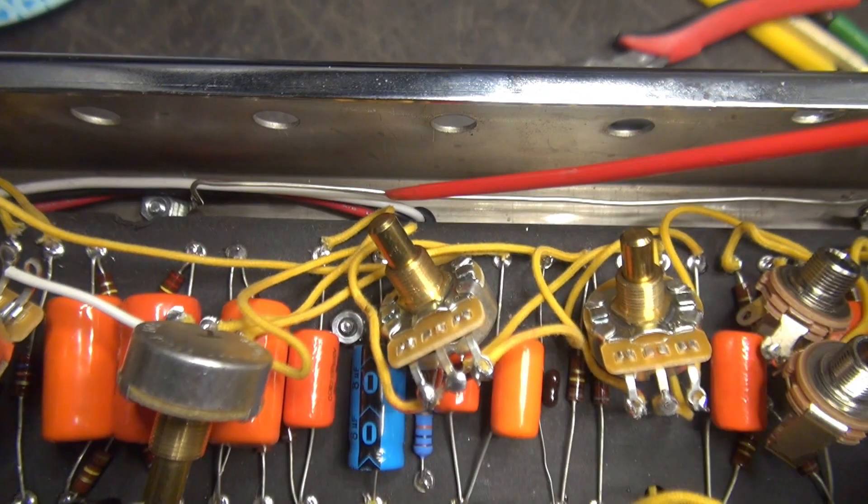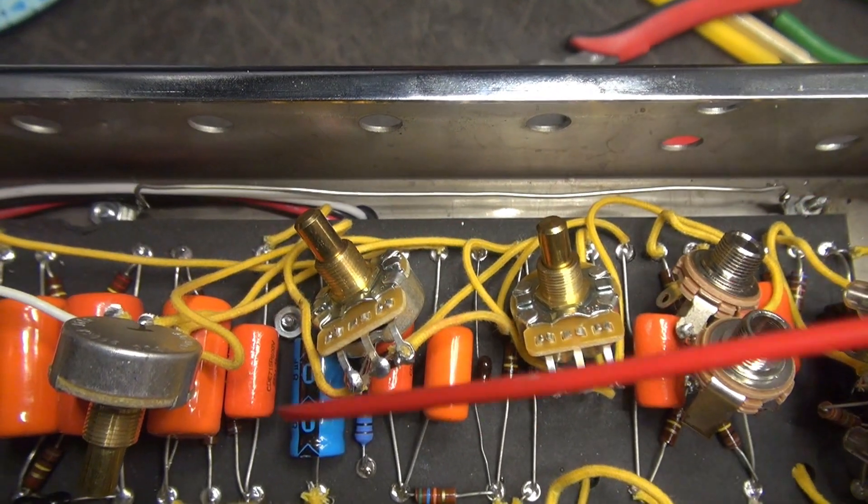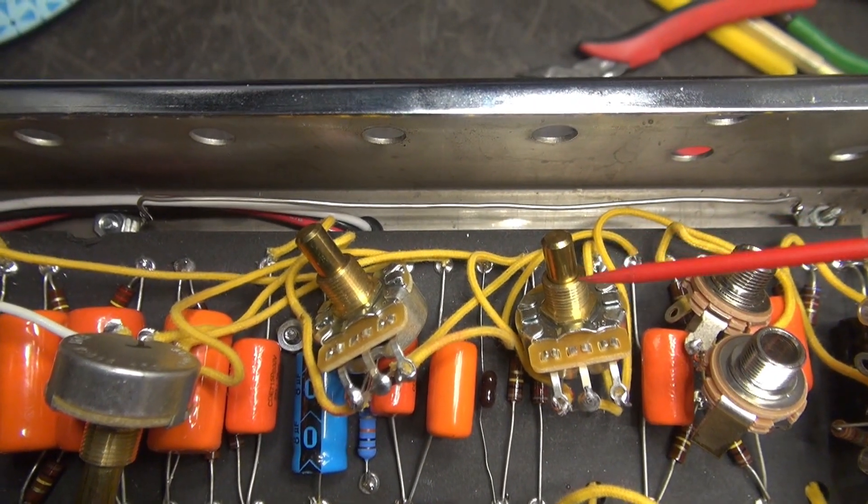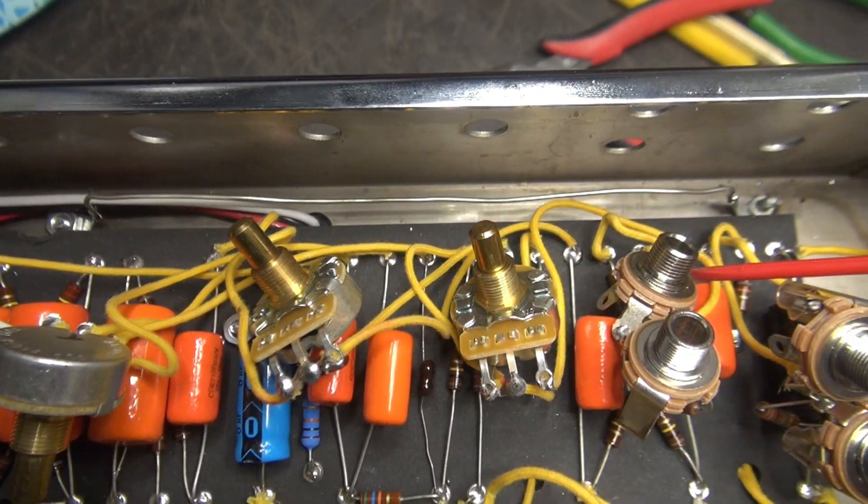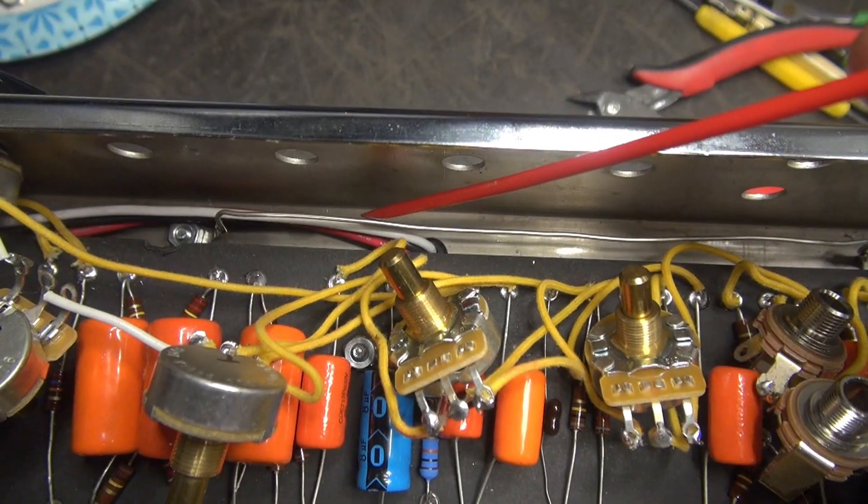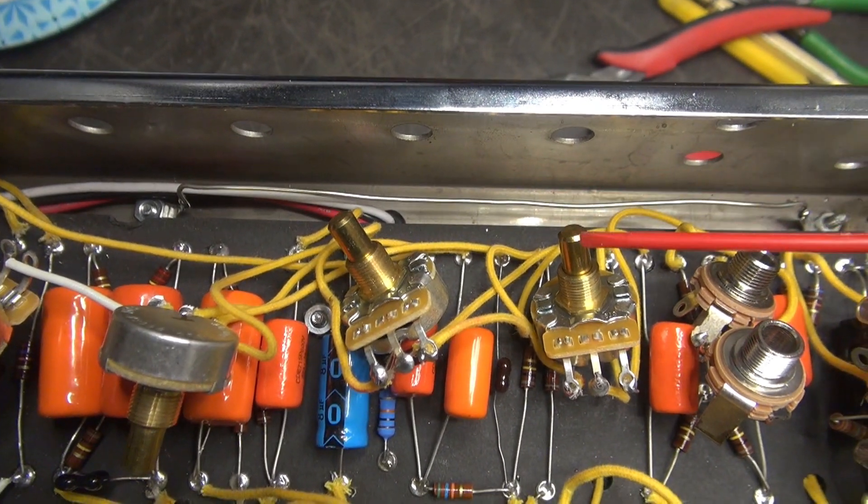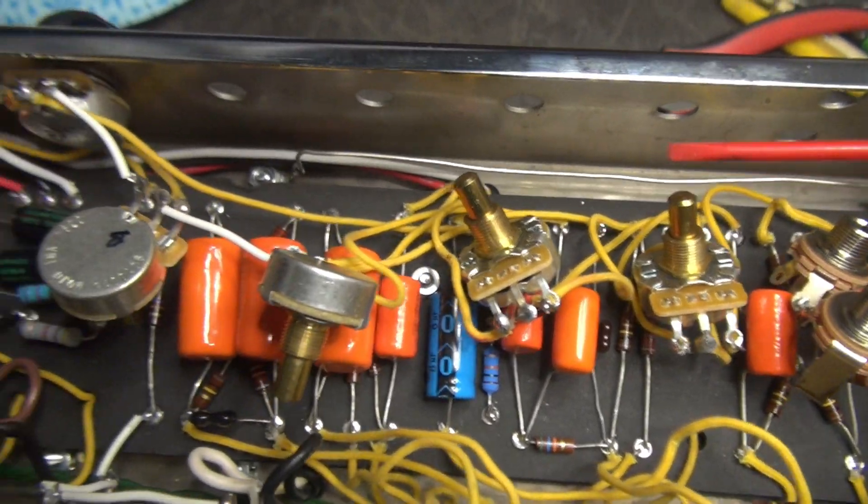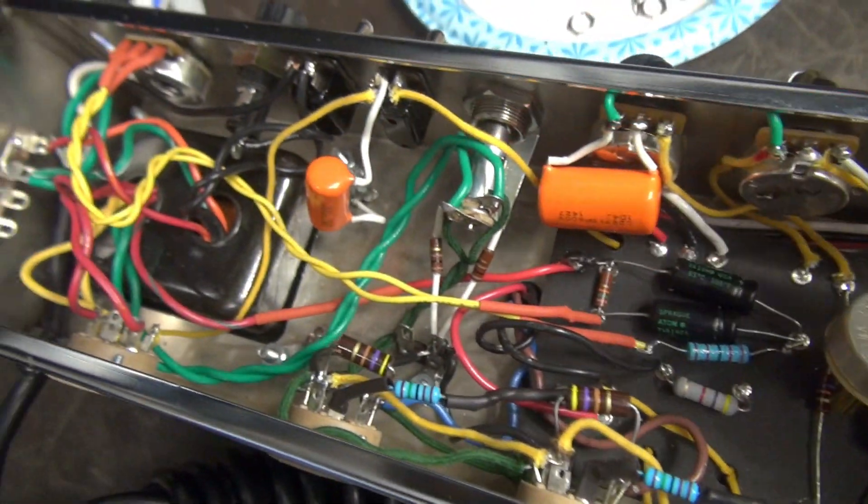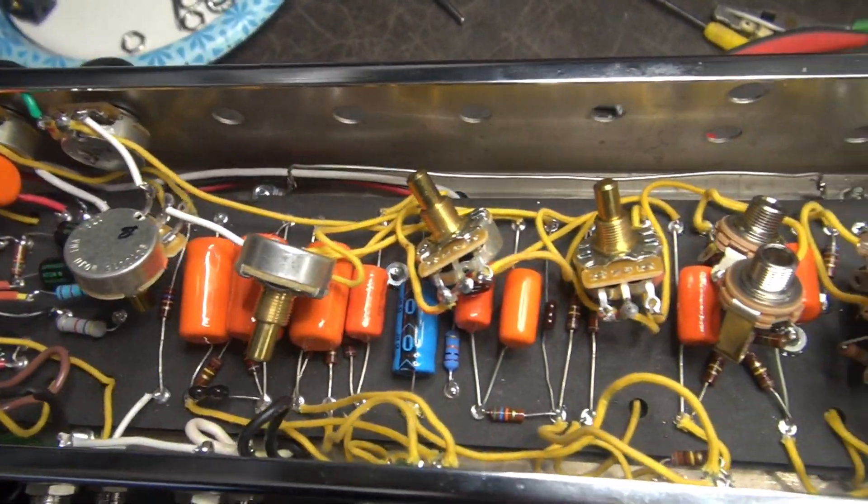There is the installed 18 gauge ground plane for the preamp section. Next thing I need to do is remove the grounds from all these controls and jacks and swing them down to this wire. This would be the common point for the preamp grounding, which should settle that section down. And that is separate from our power supply grounding.